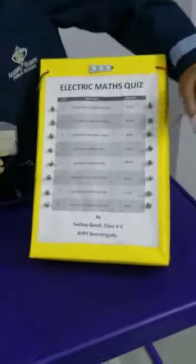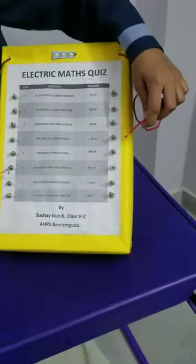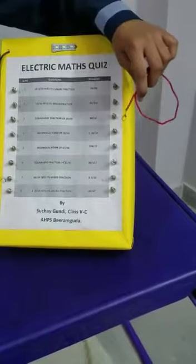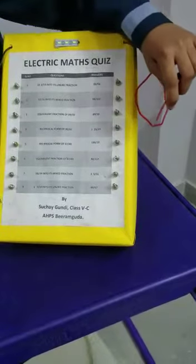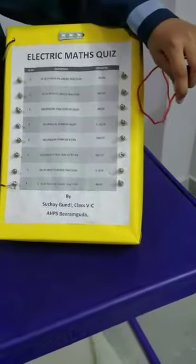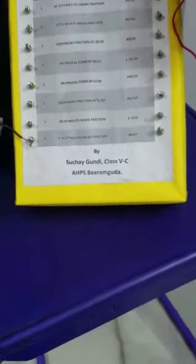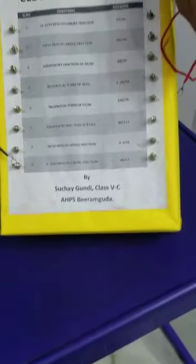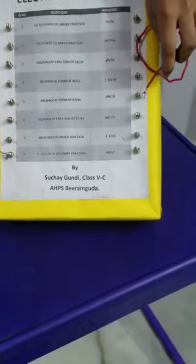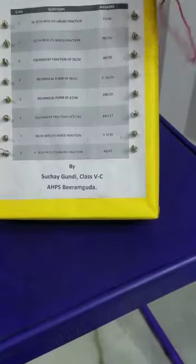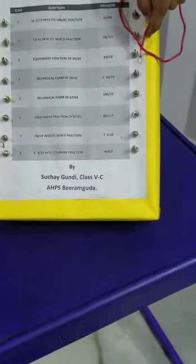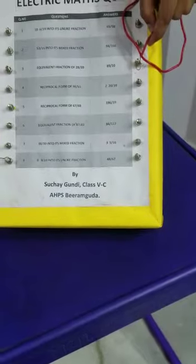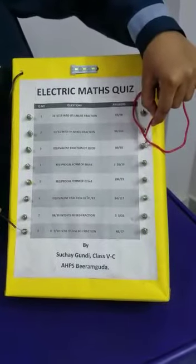Let's take the second question. Suppose we take the 8th question: 9 by 10 into its unlike fraction. Suppose I think this is the wrong answer — no. Is it this? No. Is it this? Yes. The light has blown up.